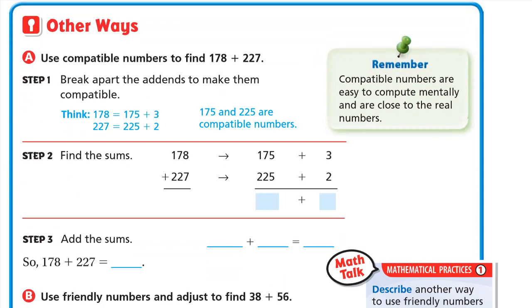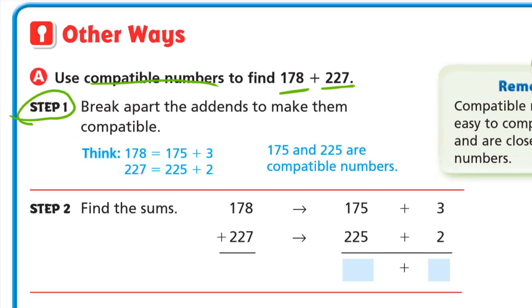Other ways you can use compatible numbers. Like here we can use compatible numbers to add 178 plus 227. First step, break apart the addends to make them compatible. So here our compatible numbers are 175 and 225. These are close to 178 and 227. So the 178 is 175 plus 3 and 227 is 225 plus 2.